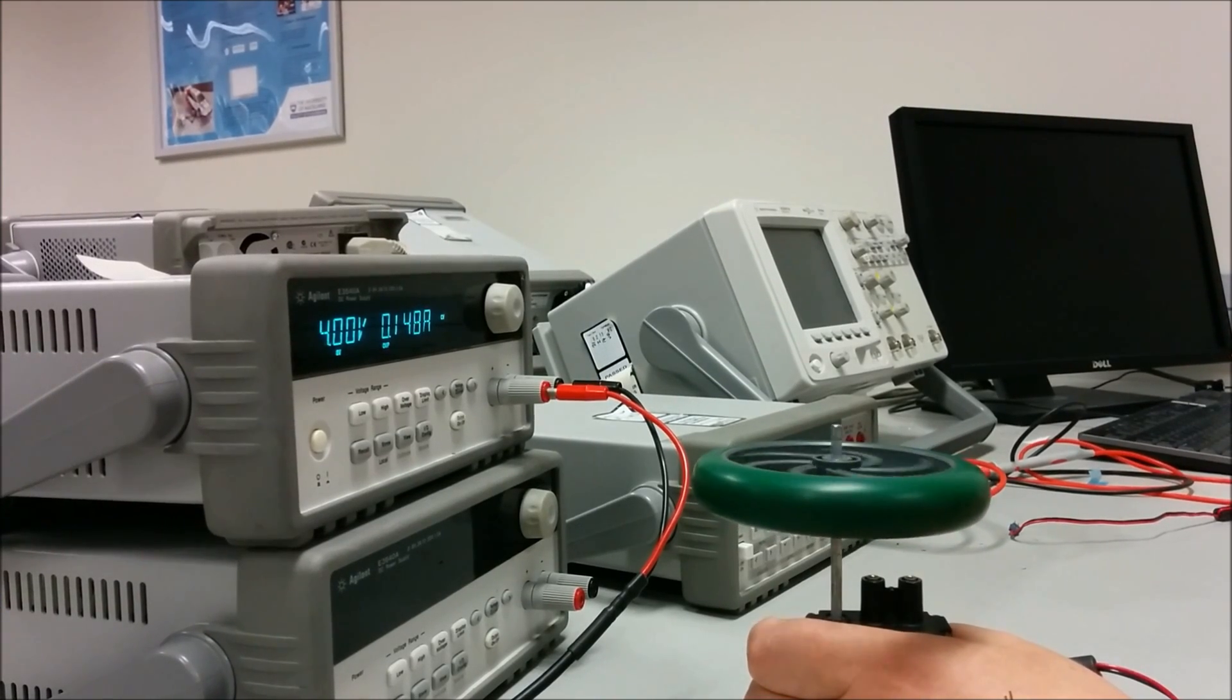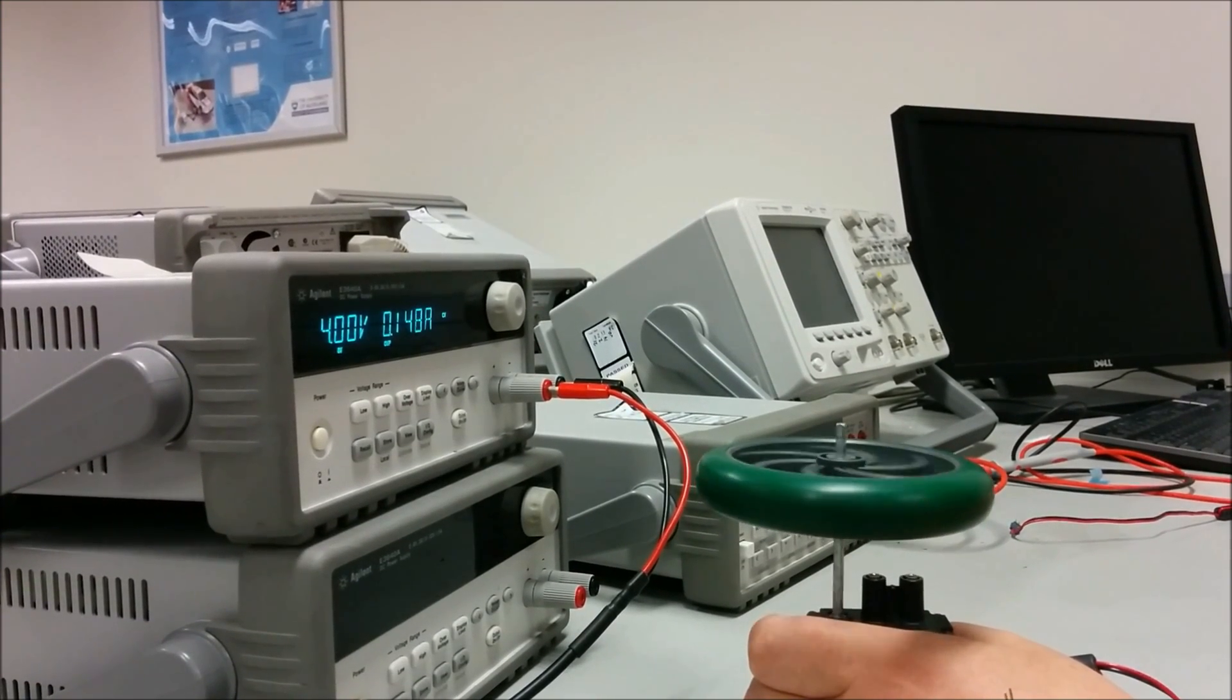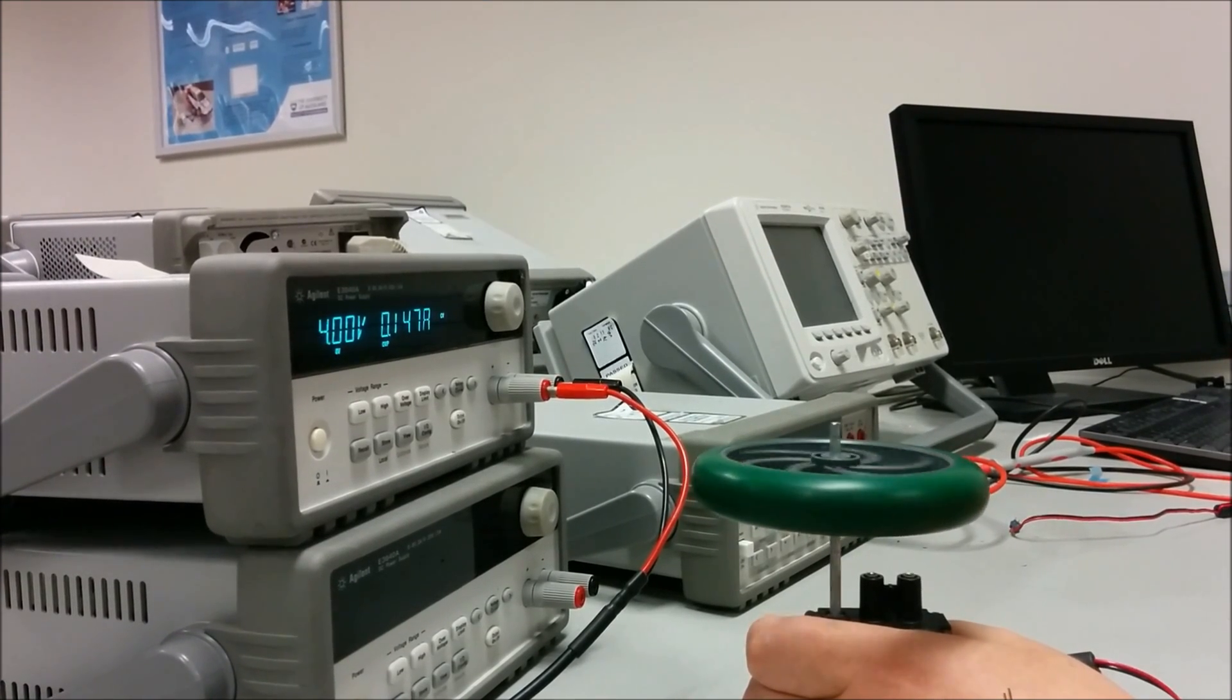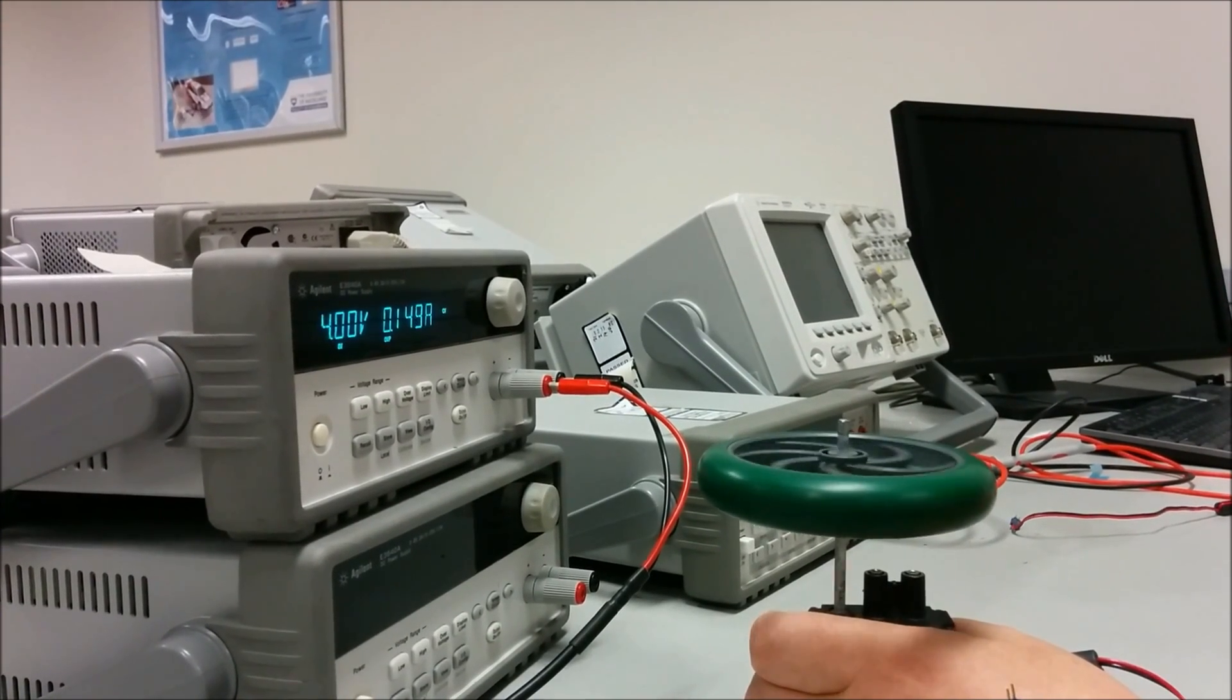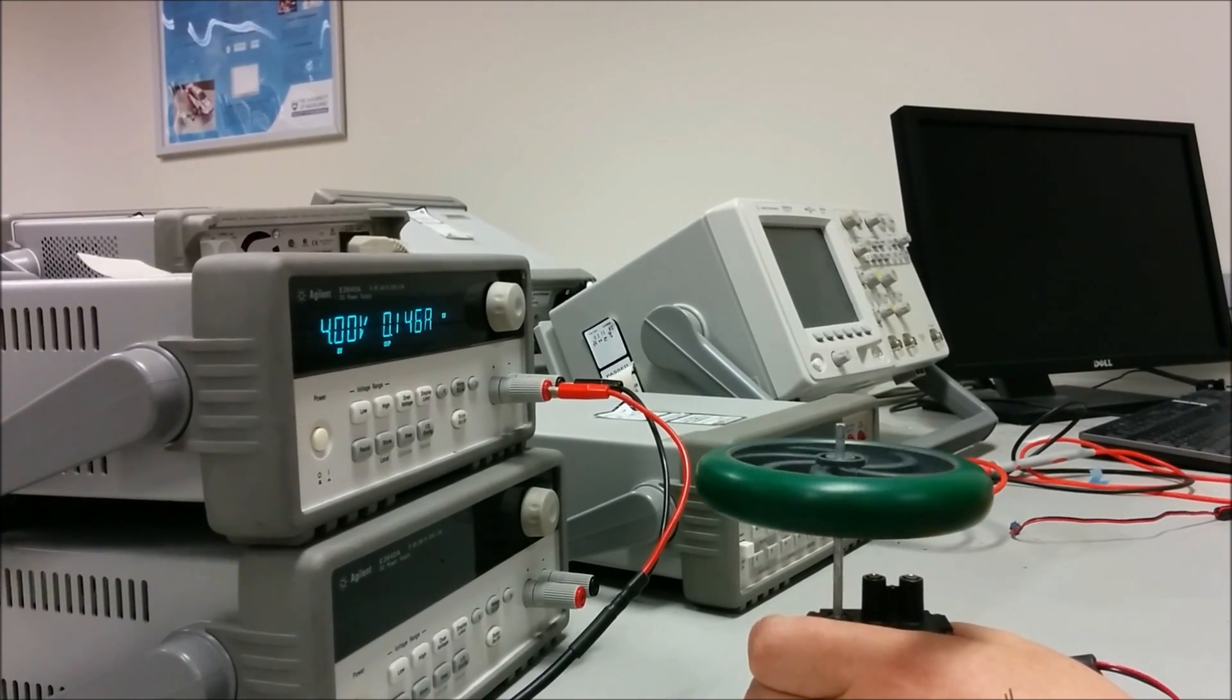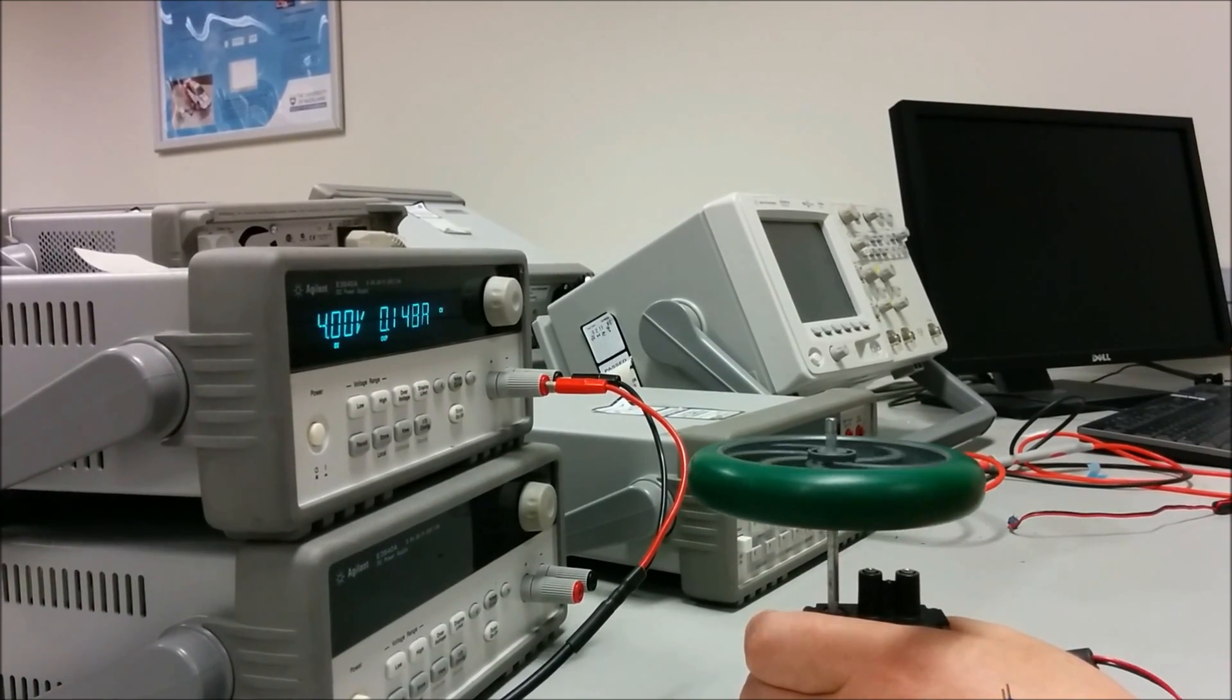In this demonstration we apply a constant voltage of 4 volts to a VEX 393 motor. When the power is turned on the motor very quickly speeds up to a point where it is generating only enough torque to oppose its internal friction. That means the back voltage in the motor is high and the current is low. In this case with 4 volts applied the current is about 0.15 amps.